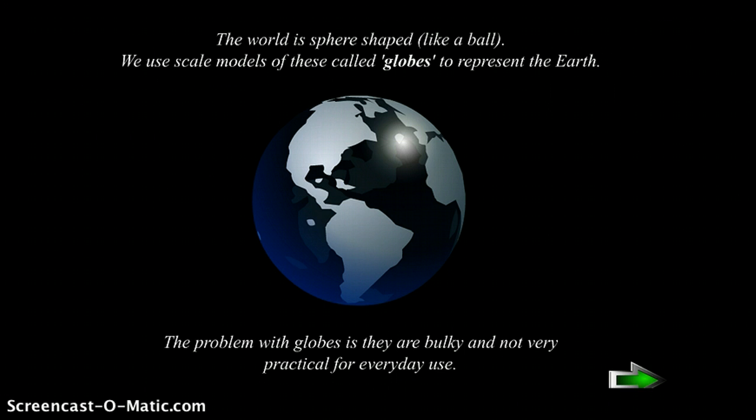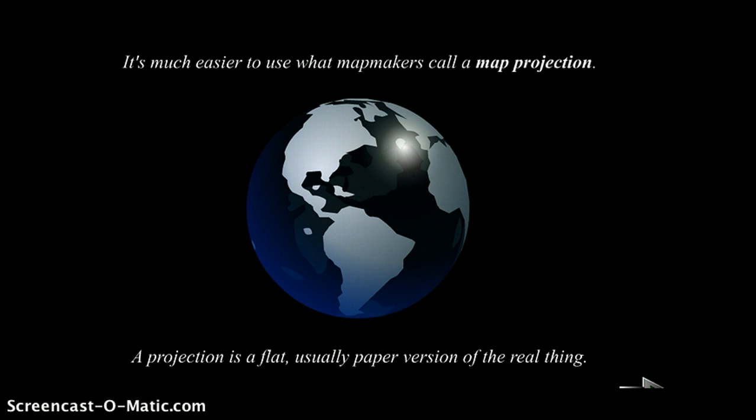We all know that the world is a sphere, shaped like a ball. We use scale models of these called globes to represent the earth. The problem with globes is that they are bulky and not very practical for everyday use. So it's much easier to use what map makers call a map projection. By the way, map makers are known as cartographers. A projection is a flat, usually paper version of the real thing, much like we have in our textbooks.